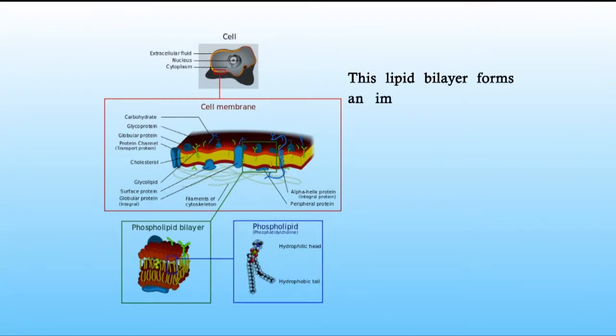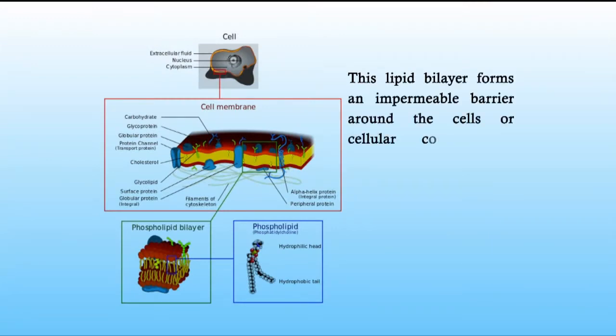The biomembranes have a similar structure formed by assemblies of lipids and protein molecules which are held together by non-covalent interactions. Generally, all membranes have a basic structure made up of a continuous lipid bilayer. This lipid bilayer forms an impermeable barrier around the cells or cellular compartments, limiting the flow of water-soluble molecules.